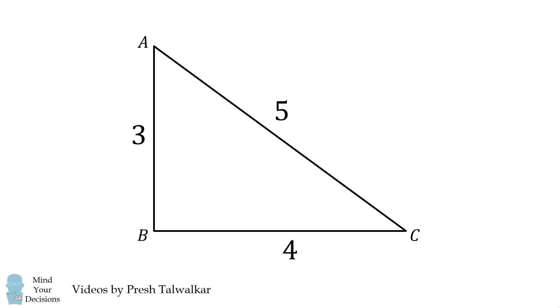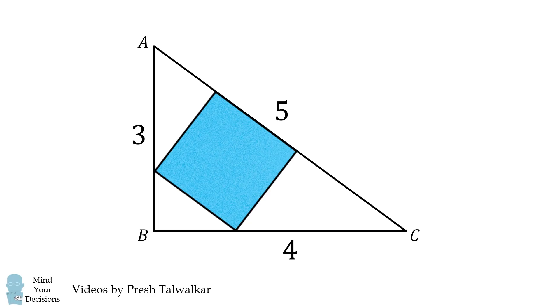Mind your decisions. I'm Presh Talwalkar. Triangle ABC has side lengths of 3, 4 and 5. A square is inscribed with one side along the side AC. What is the area of the inscribed square?